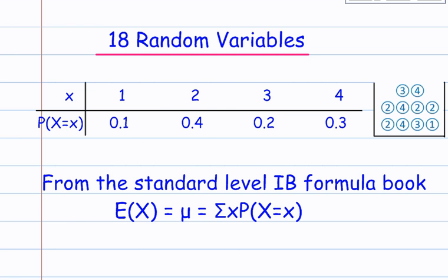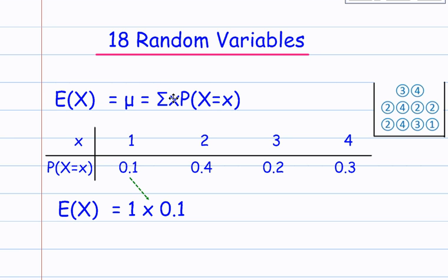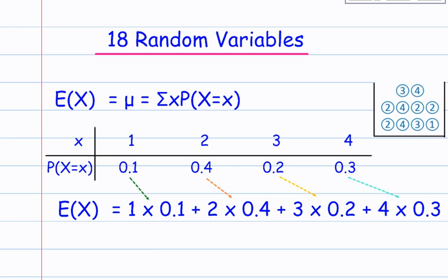So let's put that together. The sum of X times the probability: 1 times 0.1, add 2 times 0.4, add 3 times 0.2, add 4 times 0.3.